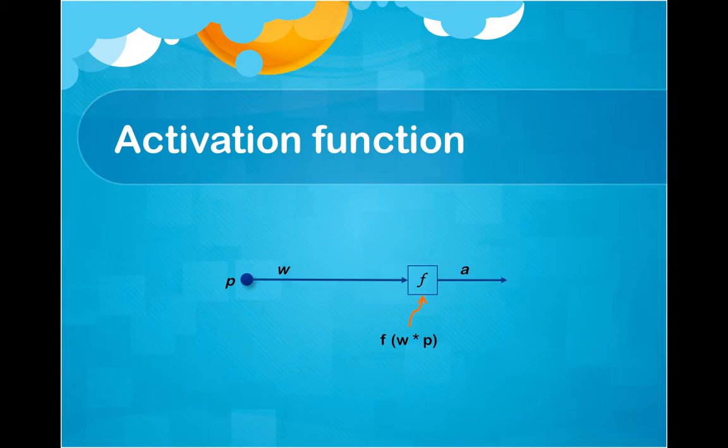As you can see here, the W as weight multiplied by P as pressure is an input parameter of the activation function.